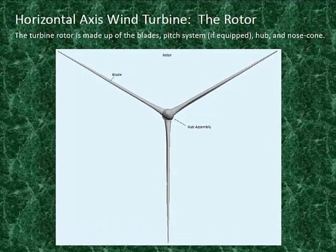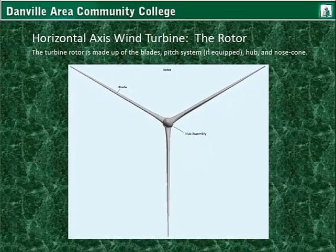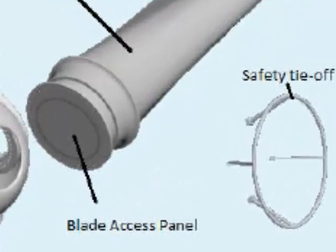The turbine rotor is made up of the blades, the pitch system if equipped, the hub, and the nose cone. The turbine rotor also has a tie-off ring used for maintenance technicians when working within the hub, descending into one of the blades for maintenance, or for inspection.